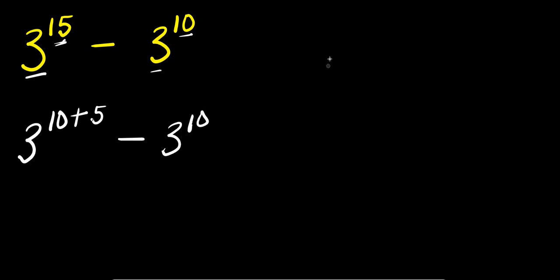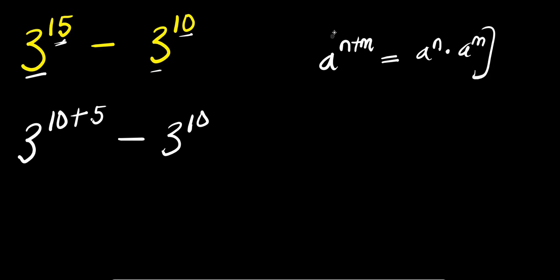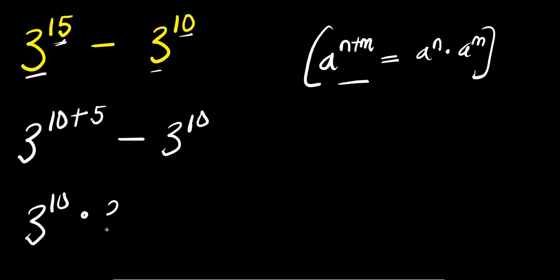Now, if you have a to the power of n plus n, this equals a to the power of n times a to the power of n. Applying this right here, I have 3 to the power of 10 times 3 to the power of 5, minus 3 to the power of 10.